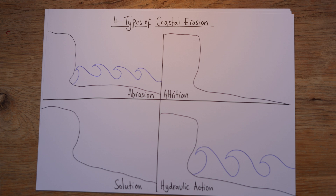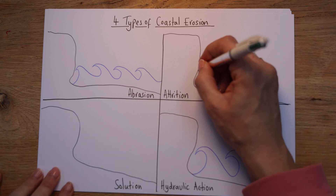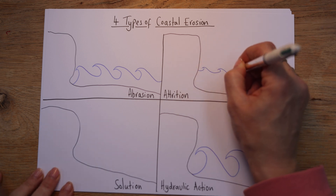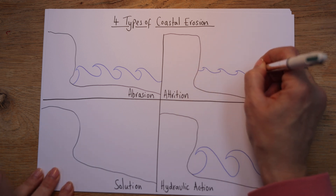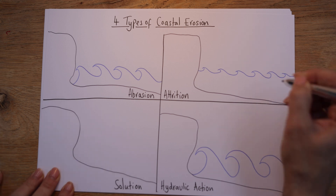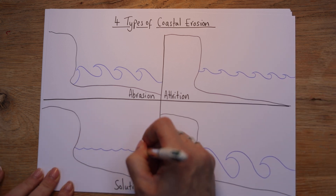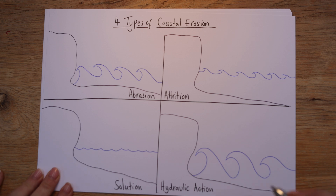Attrition and solution — they still matter, they're still types of erosion and you still need to know them — but I'm going to put some smaller waves in for attrition, and then almost a kind of flat sea for solution.